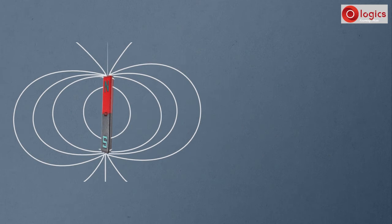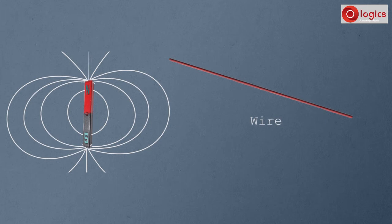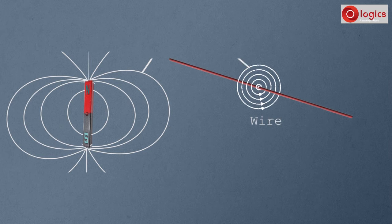This is a wire. Did you know that electric current produces a magnetic field around the wire? Yes, a magnetic field is formed around the wire when current flows.